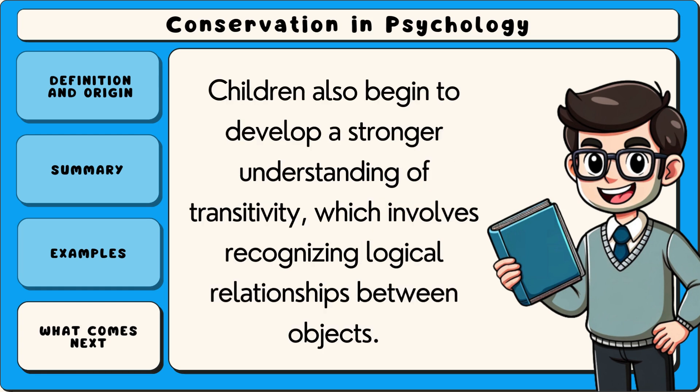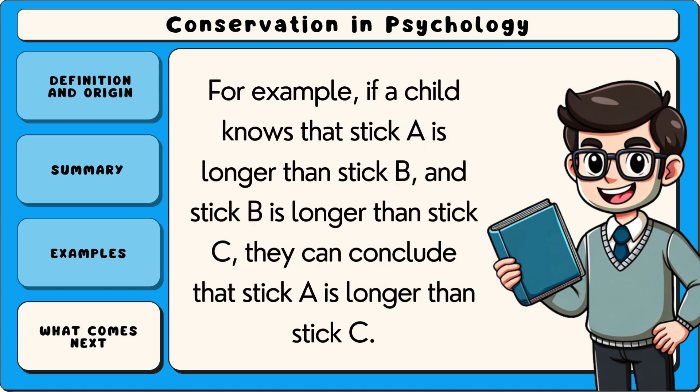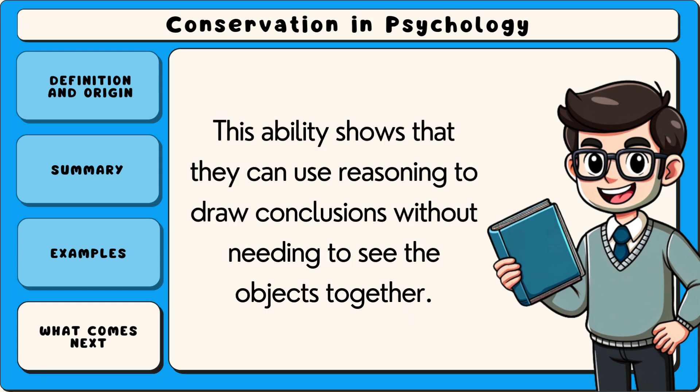Children also begin to develop a stronger understanding of transitivity, which involves recognising logical relationships between objects. For example, if a child knows that stick A is longer than stick B, and stick B is longer than stick C, they can conclude that stick A is longer than stick C. This ability shows that they can use reasoning to draw conclusions without needing to see the objects together.